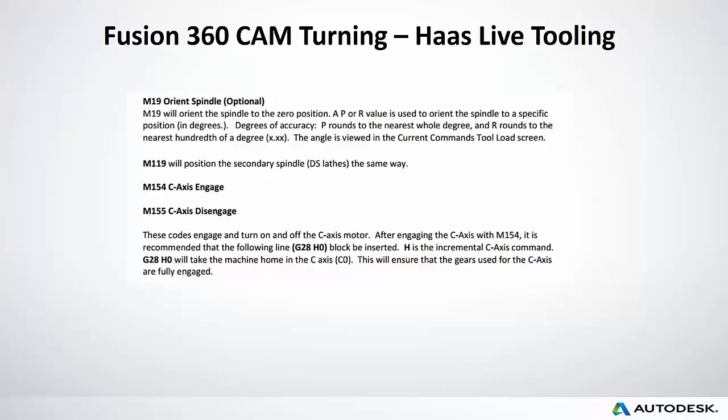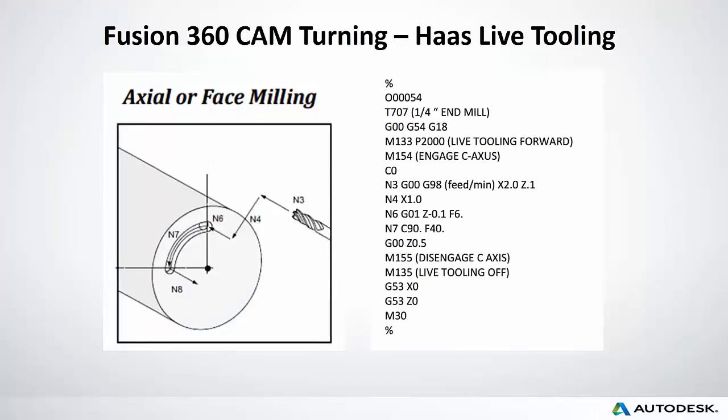M19 orients the spindle, giving codes to reorient to the angle you're working with. M119 is for the secondary spindle — if you have a DS dual-spindle lathe, you can reorient to that spindle as well. M154 means the C axis is being engaged, and M155 means it's disengaged. The Haas website has a lot more information to help you learn about those different codes and what the machine is doing.